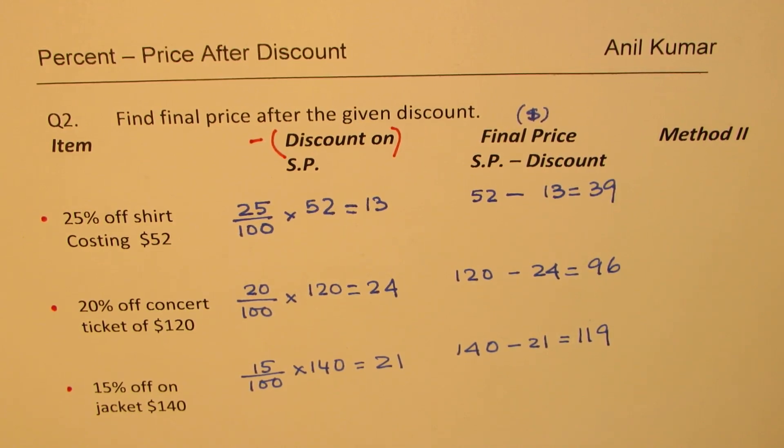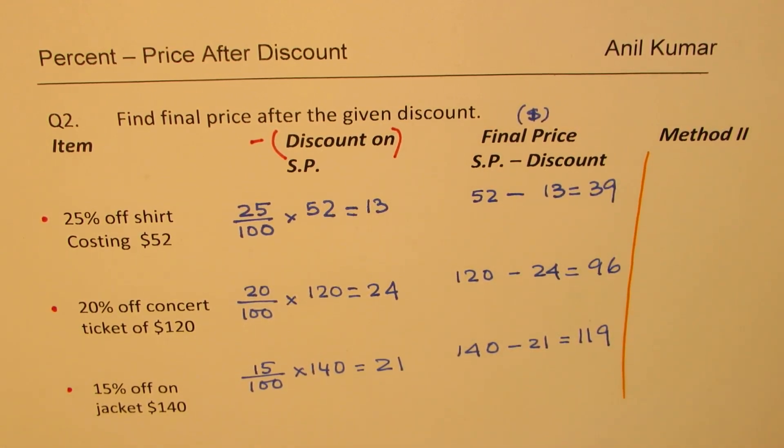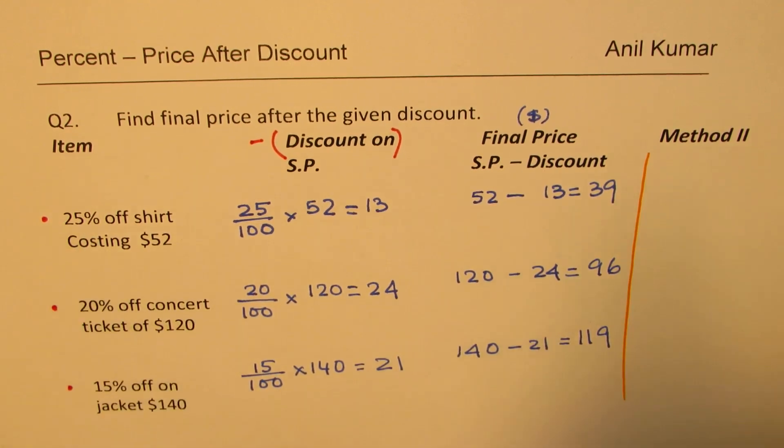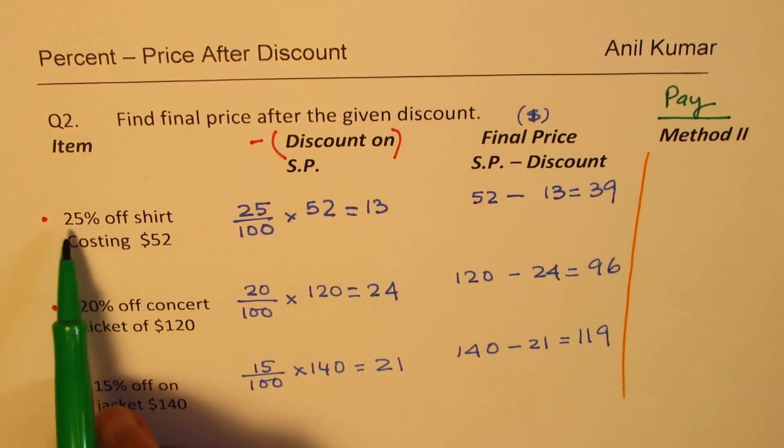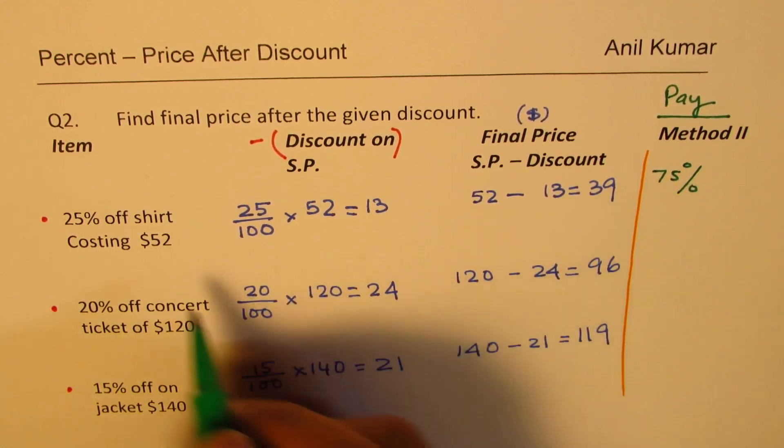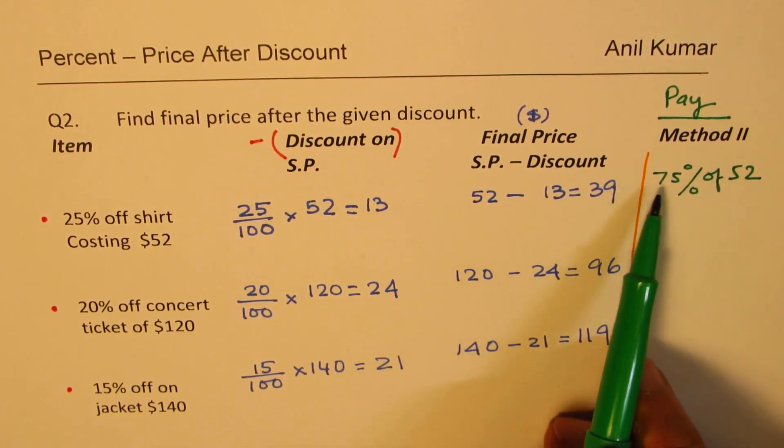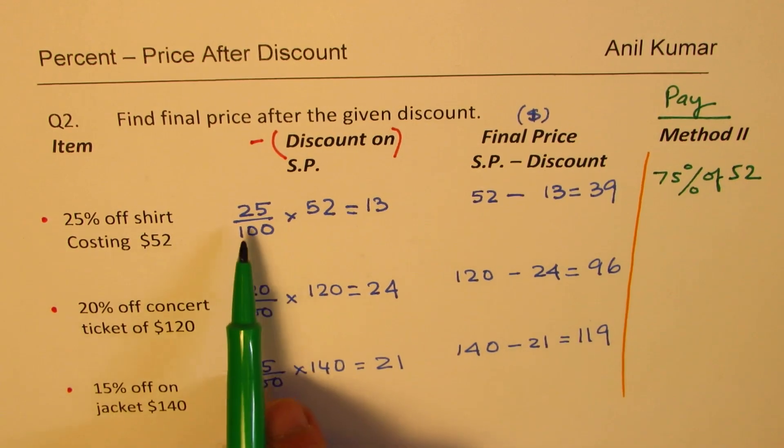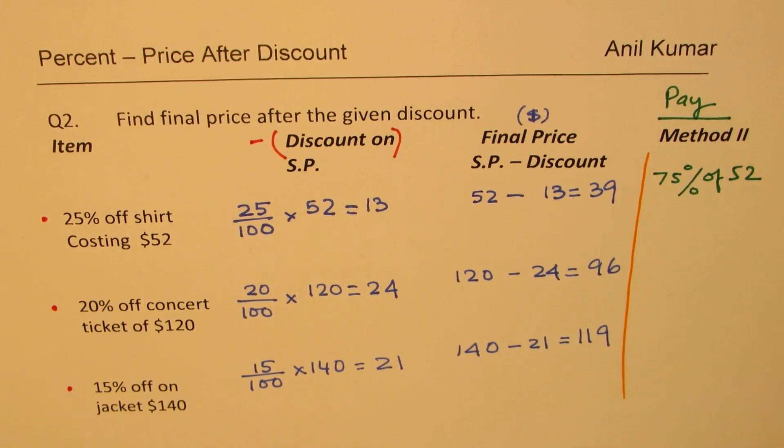So, we got all this. Now, let us try to see and understand how could we do it direct. And we'll understand the meaning of discount much better. Now, when I say the discount is 25%, that means how much do you pay? That is what you have to think about. You do not pay 25%, but in this case, you pay 75% of 52. Does it make sense? You pay 75% of 52 since 25 was off. You were not paying 25.